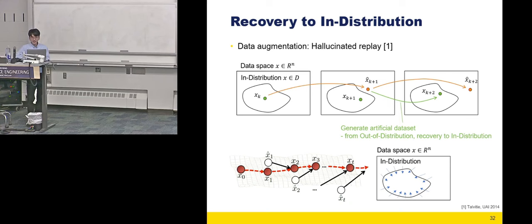Additionally, there is a data augmentation technique known as hallucinated replay that can return the out-of-distribution data back to the in-distribution data. This method starts with modeling using an existing data set. The initial prediction may fall outside of the in-distribution, which is orange color of XK plus one hat. We generate artificial data set pair from the XK plus one hat going to the XK plus two. We augment the data, this kind of new artificial data set for training the new model, which can teach the model to return from out-of-distribution to in-distribution. By doing that, we can train the model that can acquire in-distribution stability and thereby enhance long-term prediction performance.